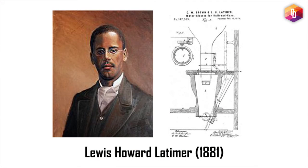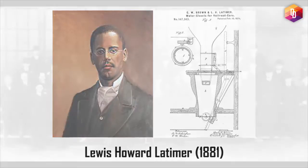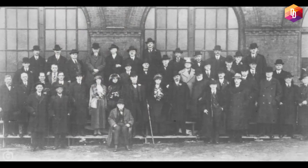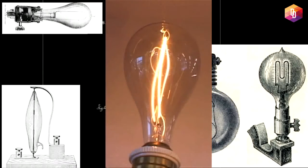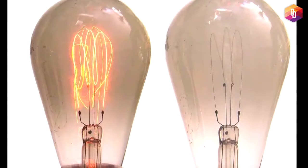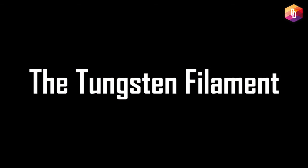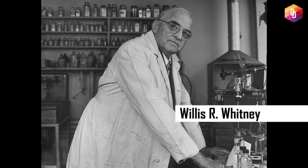In 1880, Thomas Edison's company, Edison Electric Light Company, began marketing its new product. Lewis Howard Latimer improved the bulb by inventing a carbon filament, patented in 1881. Latimer was a member of Edison's research team, which was called the Edison Pioneers.